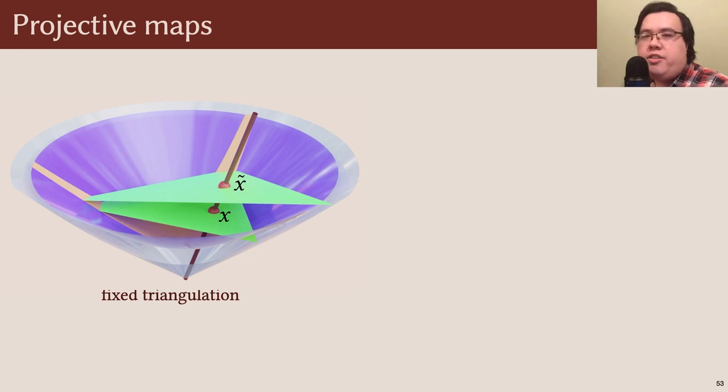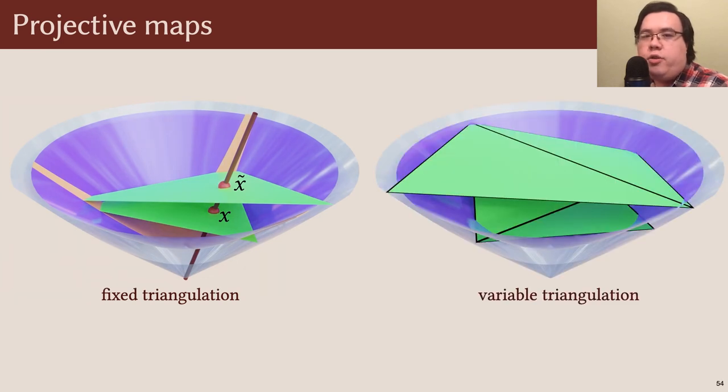But now in the variable triangulation setting, we can do exactly the same thing. For example, if we perform vertex scaling and also flip an edge, we can simply place both triangle pairs in the light cone and scale points to map between them. This defines a piecewise projective map on the common subdivision of the two meshes.